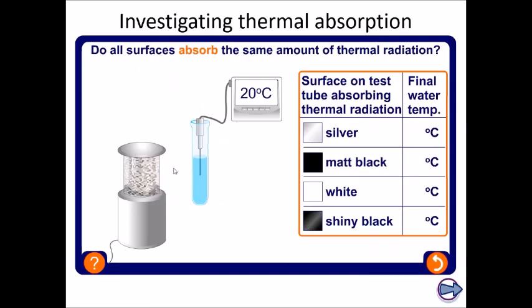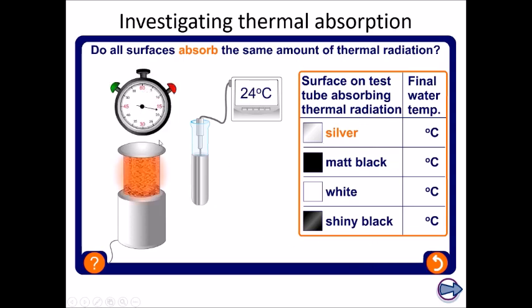The other half of this is, well what about absorbing radiation? Because these surfaces can absorb radiation as well. If we do the same thing, if we cover this beaker of water with a silver surface and then we turn the heater on here, so we're trying to heat this up by heat radiation, and the temperature only goes up to 28 degrees C.